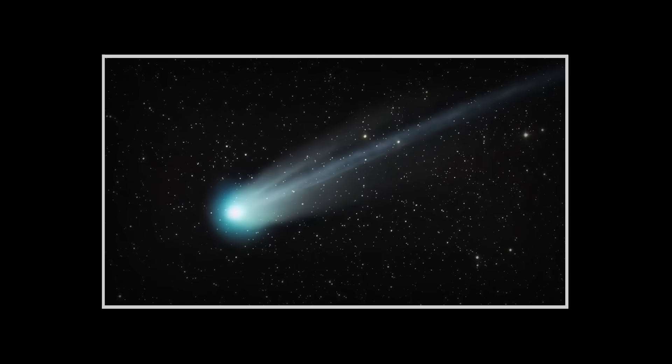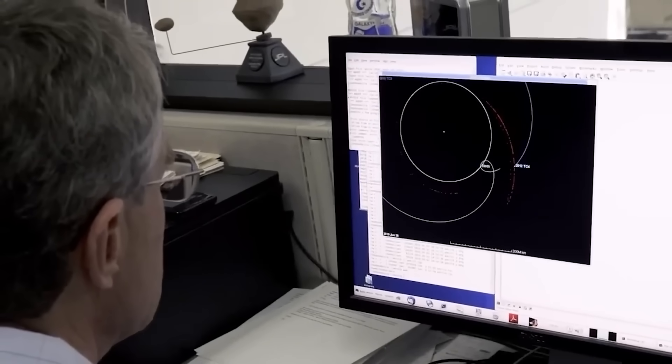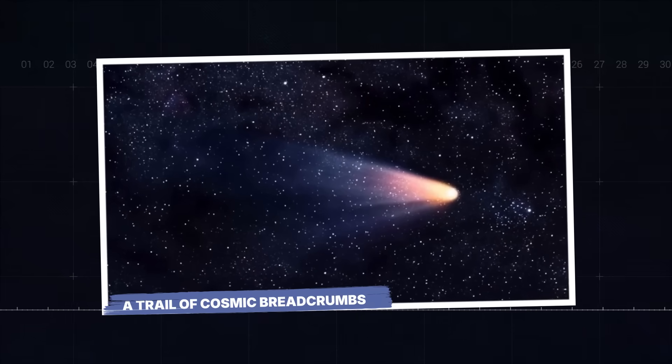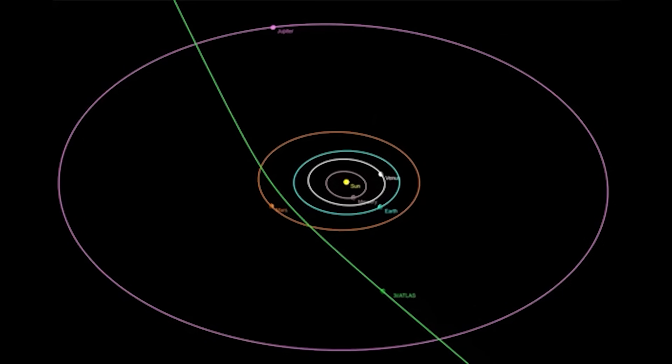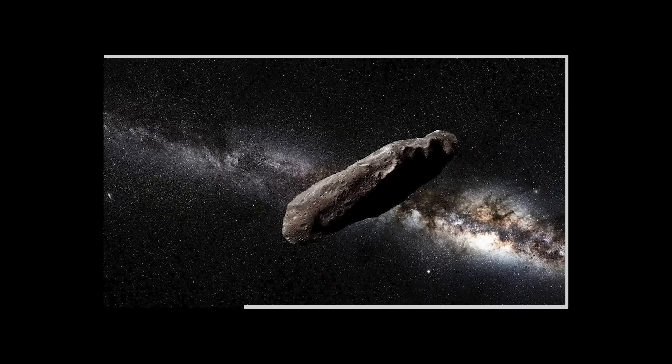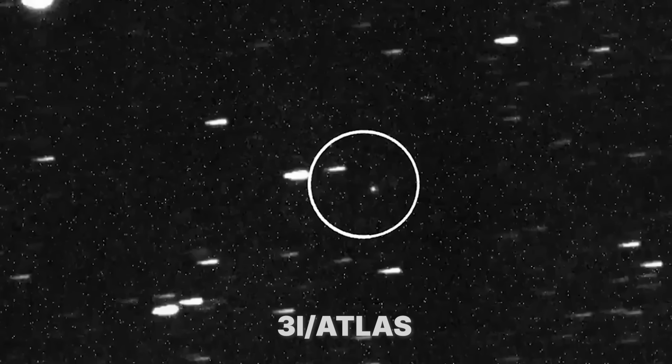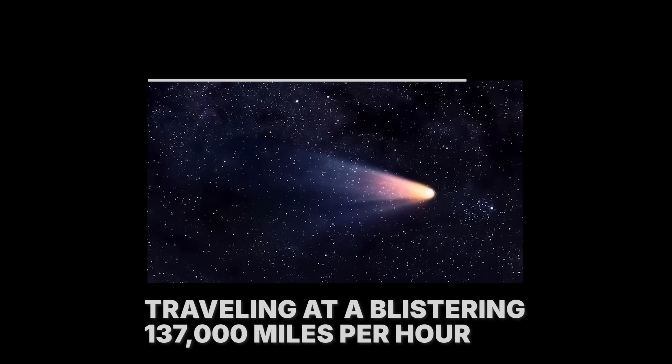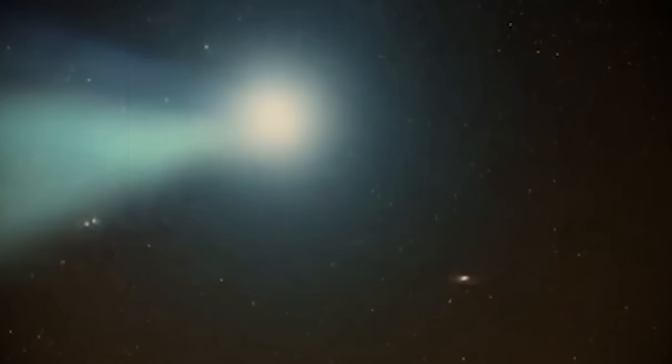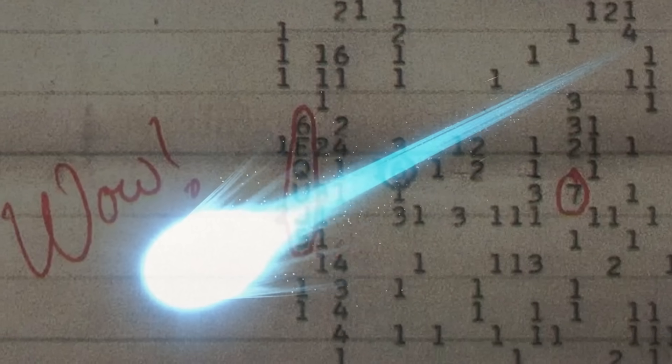A visitor from another star. What if the signal wasn't a message, but a signpost, a trail of cosmic breadcrumbs? Fast forward to 2025. A new object is detected streaking through our solar system. It's not an asteroid, it's not a comet from our own neighborhood. It's an interstellar visitor, the third of its kind ever detected, named 3i Atlas. And it's behaving very, very strangely. Traveling at a blistering 137,000 miles per hour, this object is moving too fast to be captured by our sun's gravity. It's on a one-way trip through our solar system, a tourist from another star system. And it's coming from the same direction as the WOW signal.